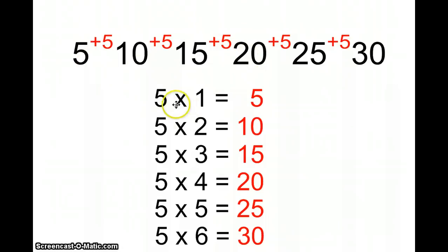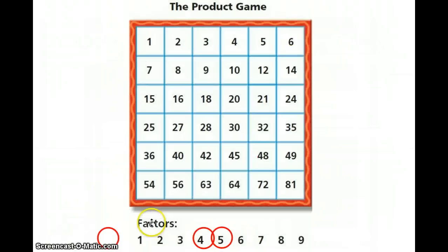Or, using the first strategy, go down to 5 times 4, and that's 20. Now on the game board, you would be able to take your crayon or marker or whatever you're using as your color and put it on top of the number 20.